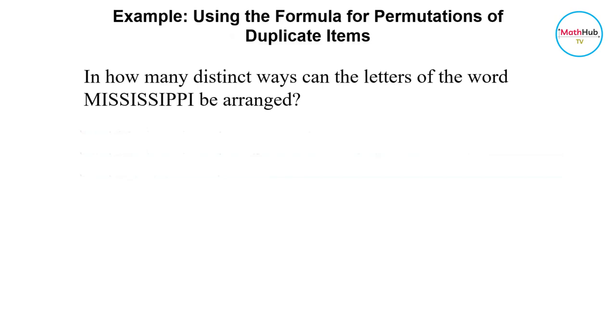To illustrate the formula for permutations of duplicate items, let us consider the following example. In how many ways can the letters of the word MISSISSIPPI be arranged? Notice that the word MISSISSIPPI contains 11 letters. So therefore, n is equal to 11.